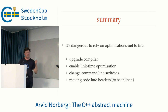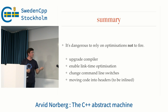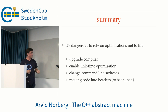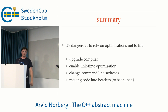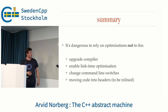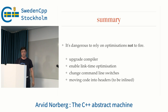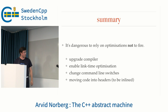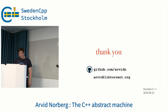To summarize: it's dangerous to rely on optimizations not to fire, because there are many things you can do inadvertently to make them start firing — for instance, upgrading a compiler, enabling link-time optimization (which lets the compiler see through more of your calls and apply more optimizations), changing command line switches to become more aggressive at inlining, or moving code into headers so that it becomes inlined and is seen through.